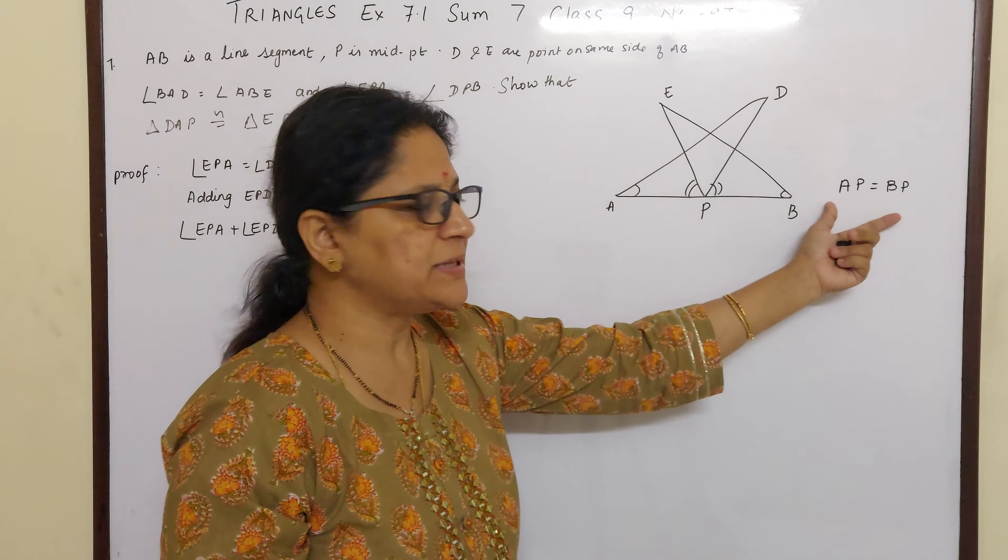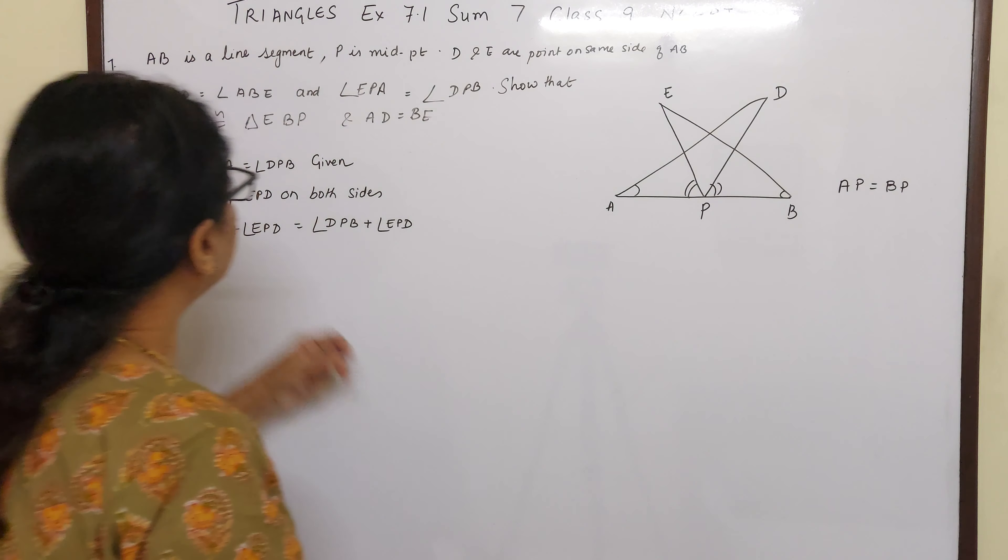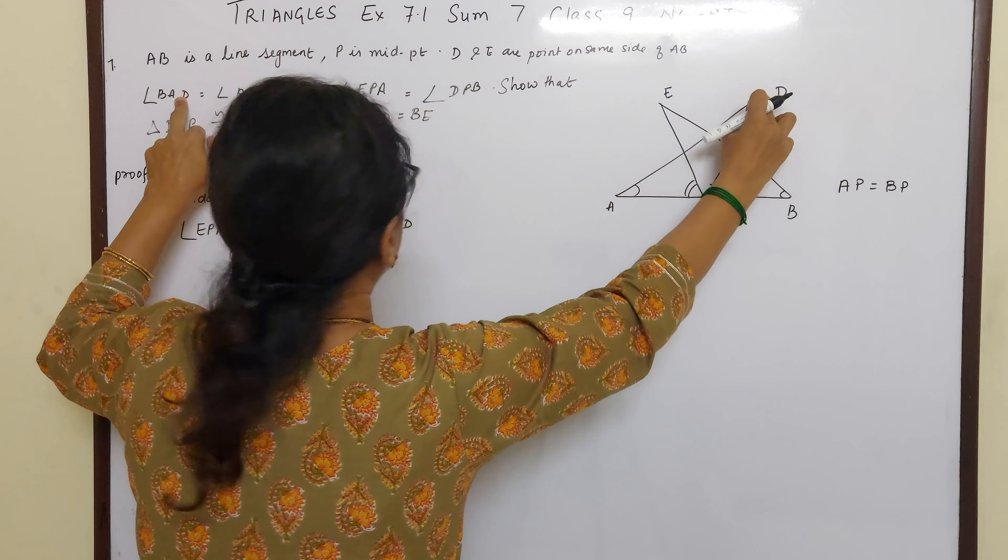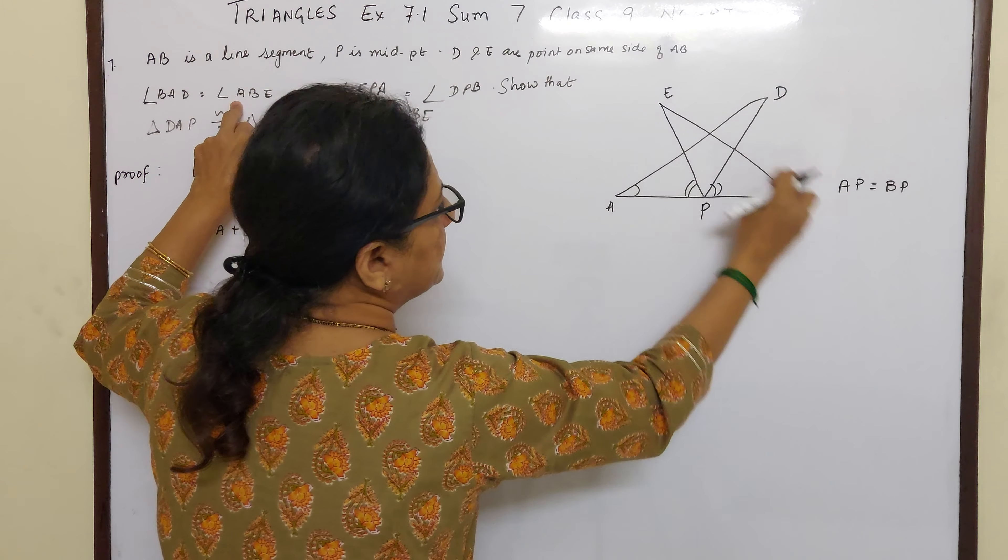And they have told that these two angles are congruent. Angle BAD is equal to angle ABE.